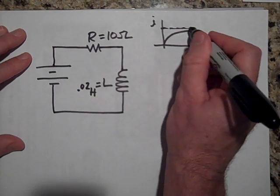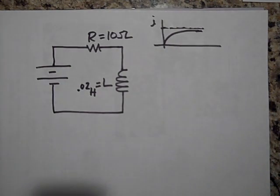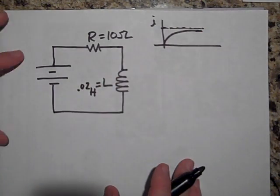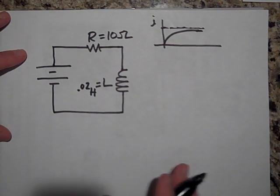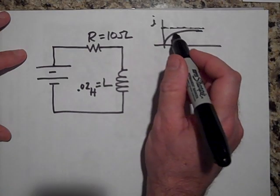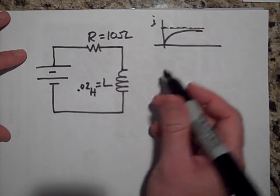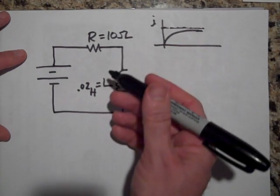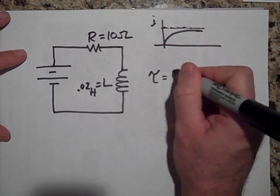And maybe you want to know, well, how fast will it take to get to its final value, how long will it take to get to the final value? And I tell you, well, it's going to take forever. But if you want to know how long it's going to take to get to about two-thirds of its final value, then all I have to do is just take L over R. The time constant is L over R.